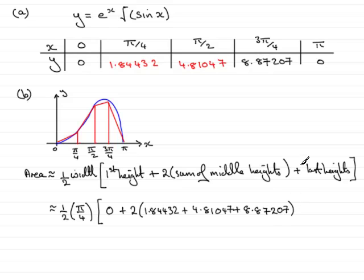Close the bracket off, and then it's plus the last height. And the last height, this one here under π, is 0. So again, I'll just put the plus 0 in just to show that I know that that exists.